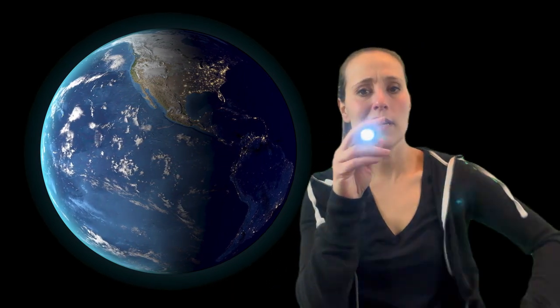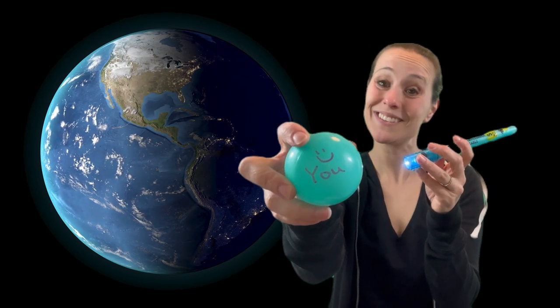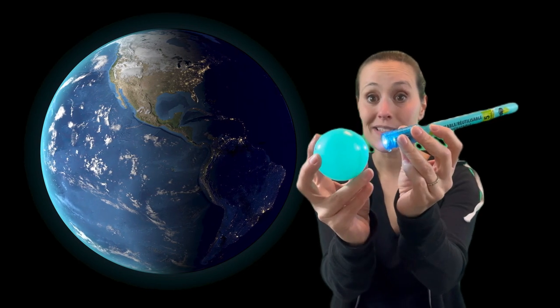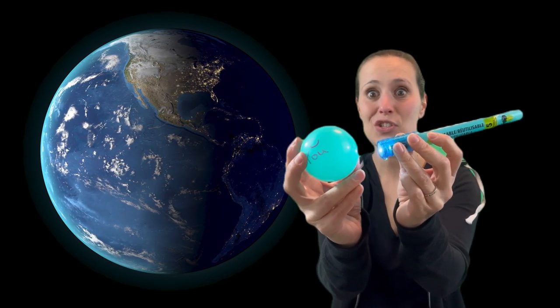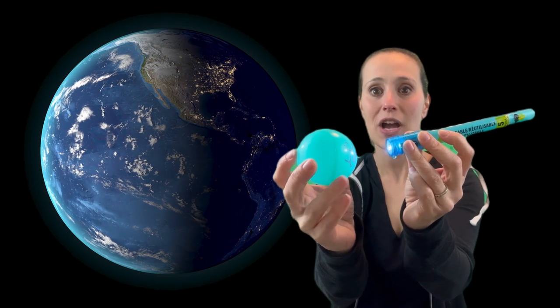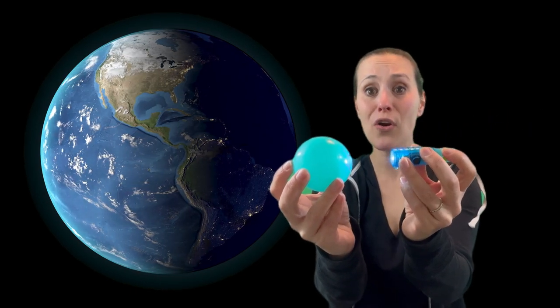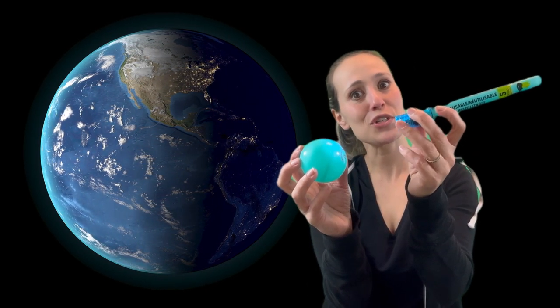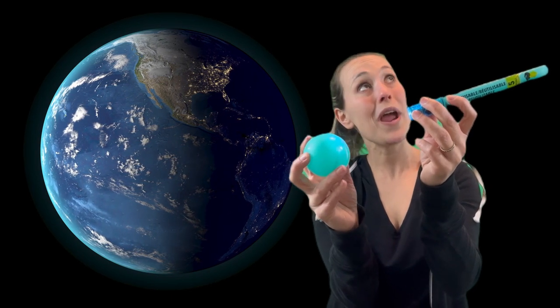This will be our sun giving off its light and warmth. This will be our Earth. It's round, and right here is you. So if you're over here, and the sun is over here, shining its rays, you can't see it. That means it's nighttime. It's dark out, and you're probably asleep. But as the Earth turns, as it's doing all the time, it shines where you are. And now, you're awake because it's morning time. You go about your day with the sun shining.